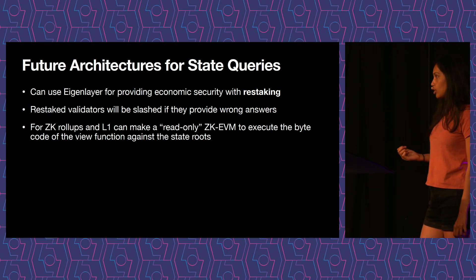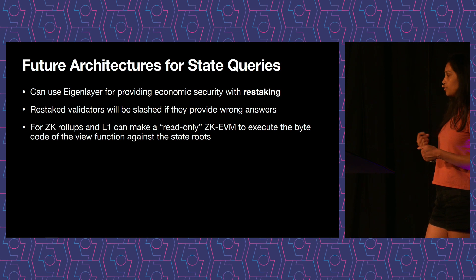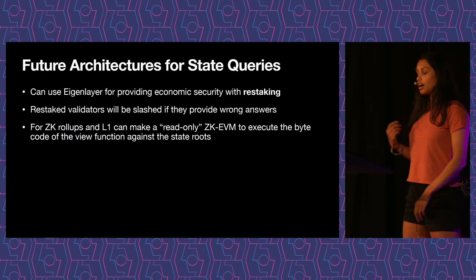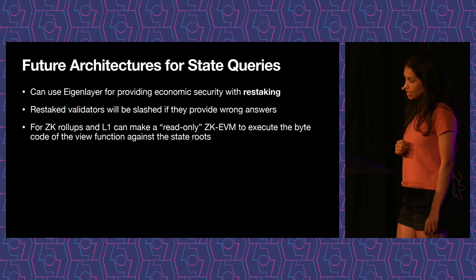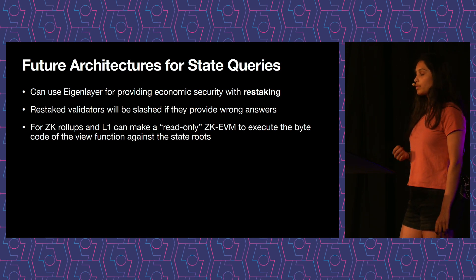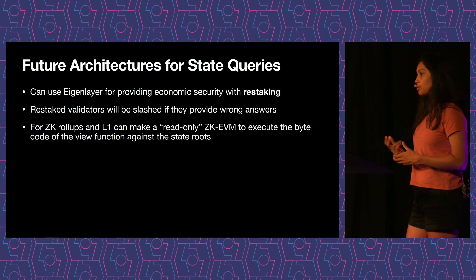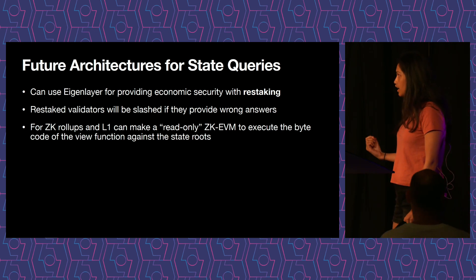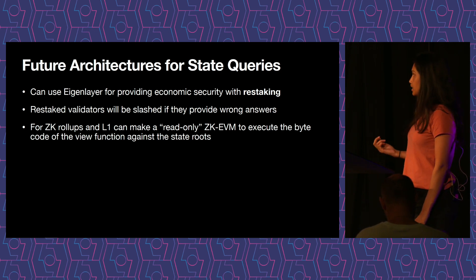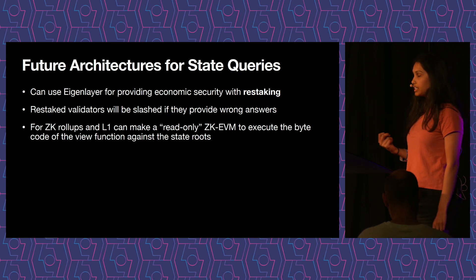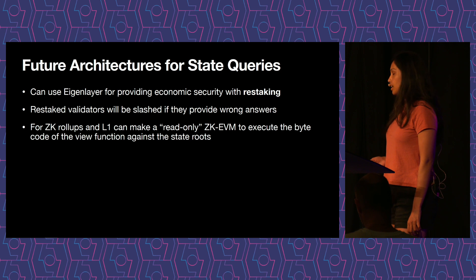For ZK rollups and L1s, we can use concepts from ZK EVMs to execute the bytecode of our view functions against state roots and provide a ZK proof of these state queries. State queries are really ergonomic — you can put in any Solidity view function and get the result on any other chain, which is why we released the API now. Later, once enough people are using it, you could run view function bytecode through a read-only ZK EVM — since view functions don't alter state — and produce a succinct proof of that view function execution. These are future directions for augmenting our state query protocol's security.